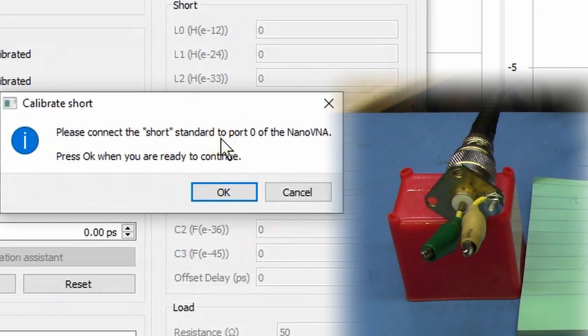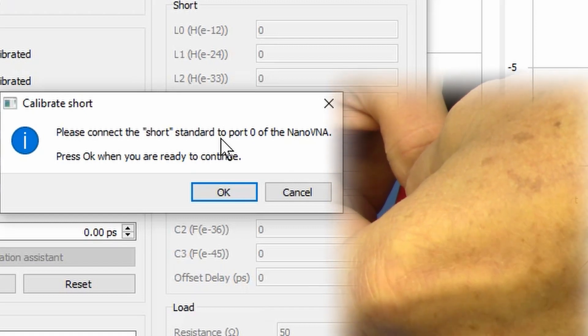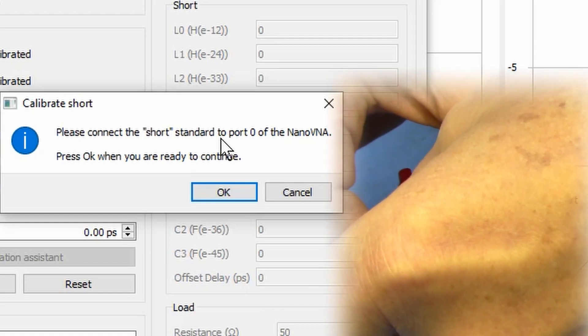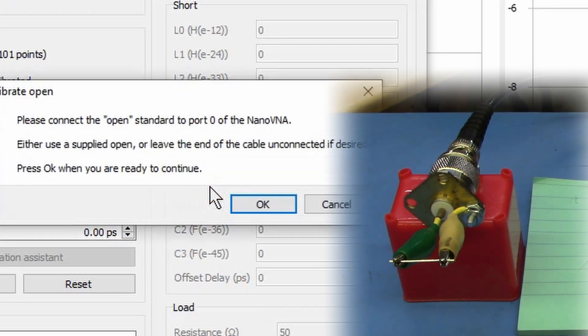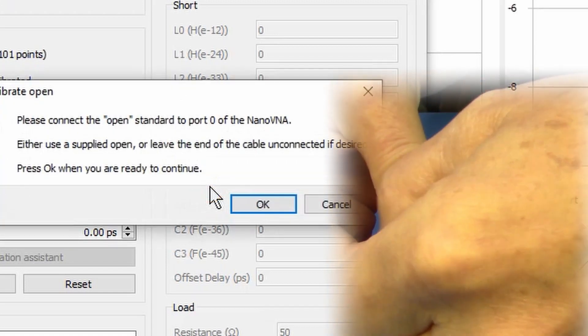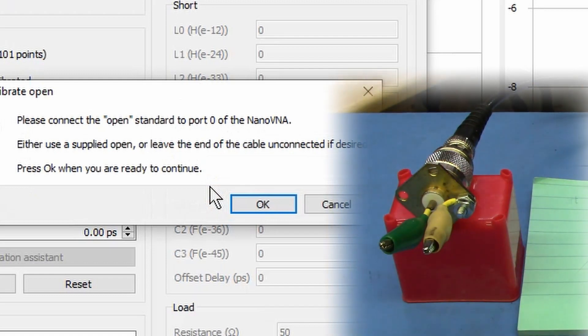Connect the short. So we are going to come here, grab our short. Connect it across our clip leads. There we go. And click on OK. And then we are going to connect up our open. Well, there it is. There is our open.